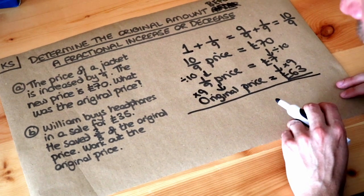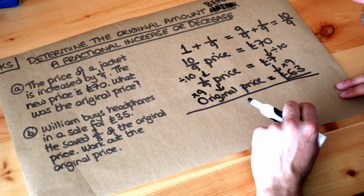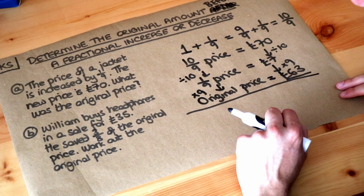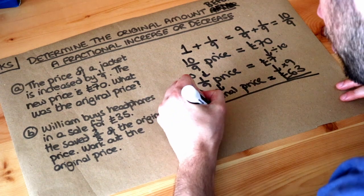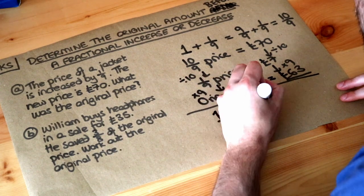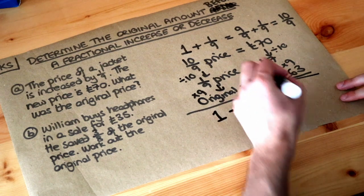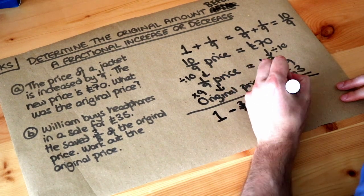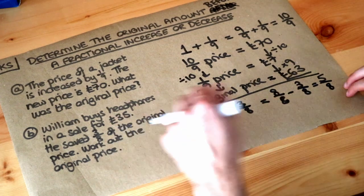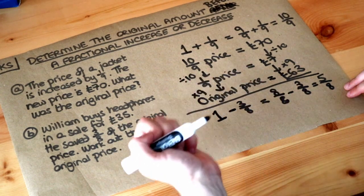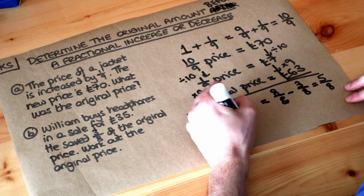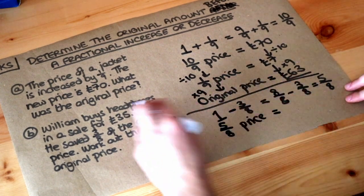Let's do another one. William buys headphones in a sale for £35. He saved three eighths of the original price. Work out the original price. The headphones start at a whole of their amount, and he saves three eighths of the price. A whole is eight eighths, so we do eight eighths minus three eighths, which gives you five eighths. That means the headphones are now five eighths of the original cost, so five eighths of the price equals £35.